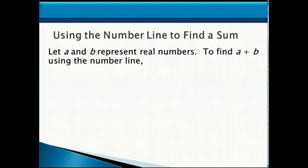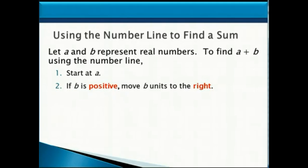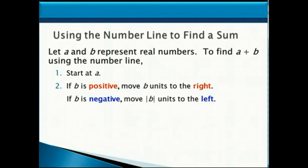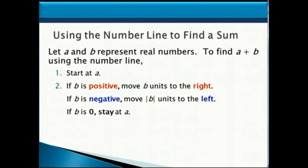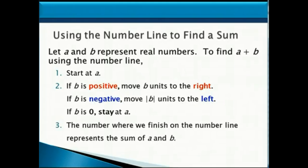Now let's review how to add real numbers using the number line. So let a and b represent real numbers. Then to find the sum a plus b using the number line, we first start at a. If b is positive, we'll move b units to the right. If b is negative, then we'll move the absolute value of b units to the left. And if b is 0, of course we'll just stay at a. The number where we finish on the number line represents the sum of a and b.